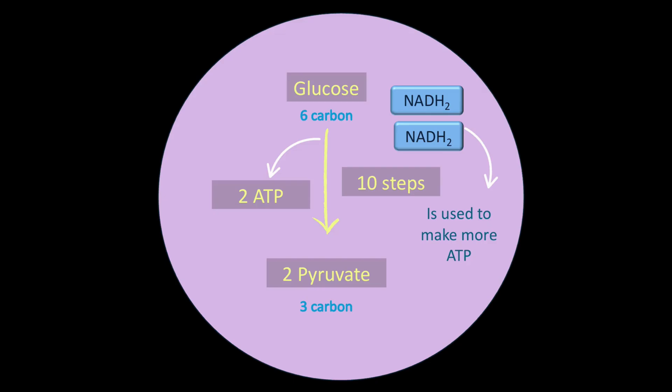We already spoke about glycolysis. In the process of glycolysis, glucose, which is a six-carbon molecule, is broken down to give two molecules of a three-carbon compound called pyruvate. In the process, two molecules of ATP alongside two molecules of NADH2 are formed, which are then later used to make more ATP for the cell.